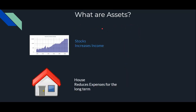What are assets? Assets are resources that you own. Two common assets are stocks and your own house. Your stocks increase your income, while your house reduces expenses for the long term.